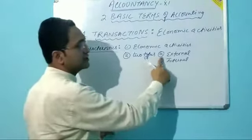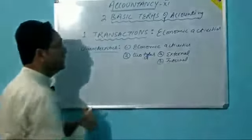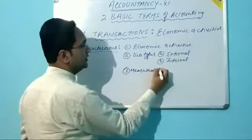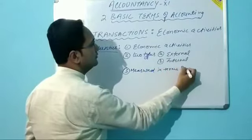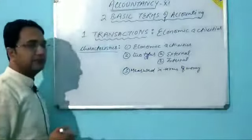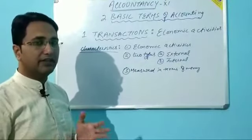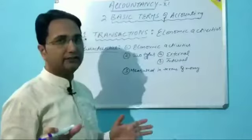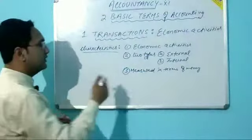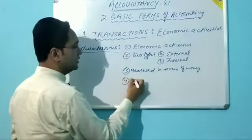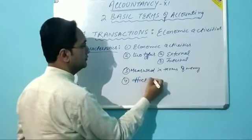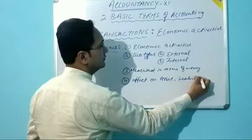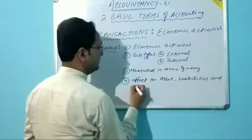So there are two types of transactions: external and internal. The third characteristic is measured in terms of money — transactions must be measured in terms of money. The fourth characteristic is the effect on assets, liabilities, and capital of the business.